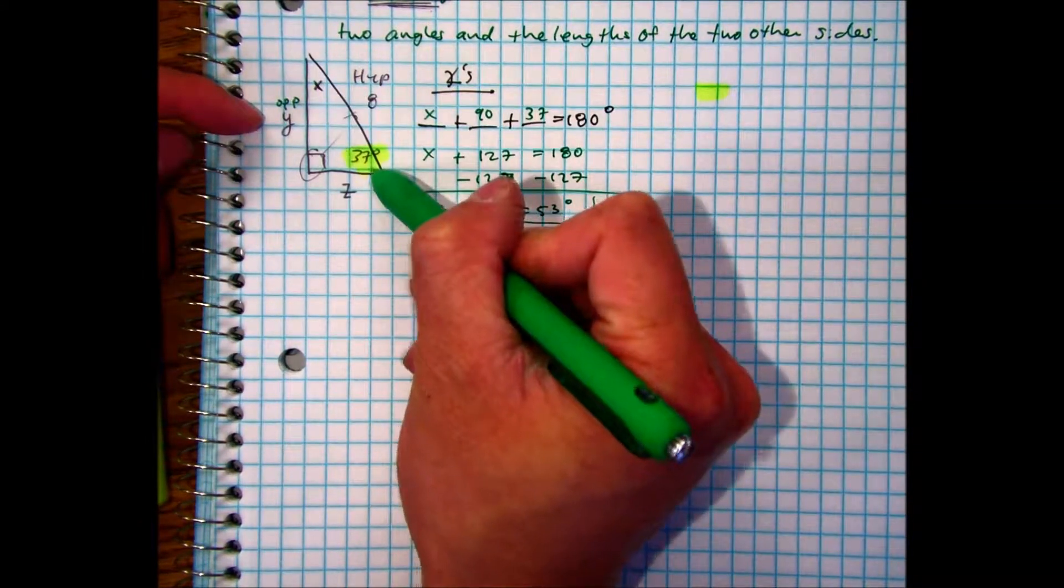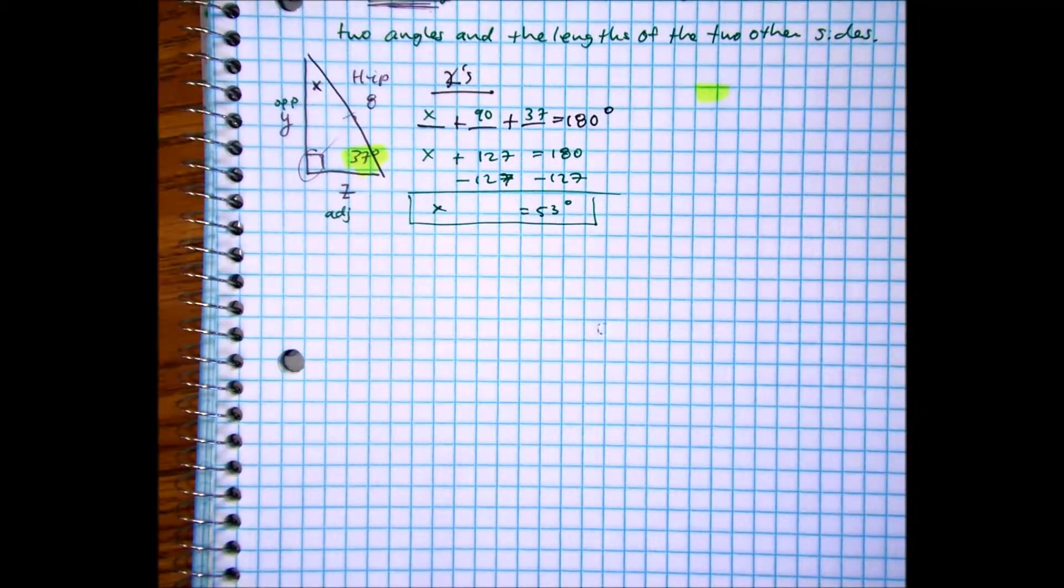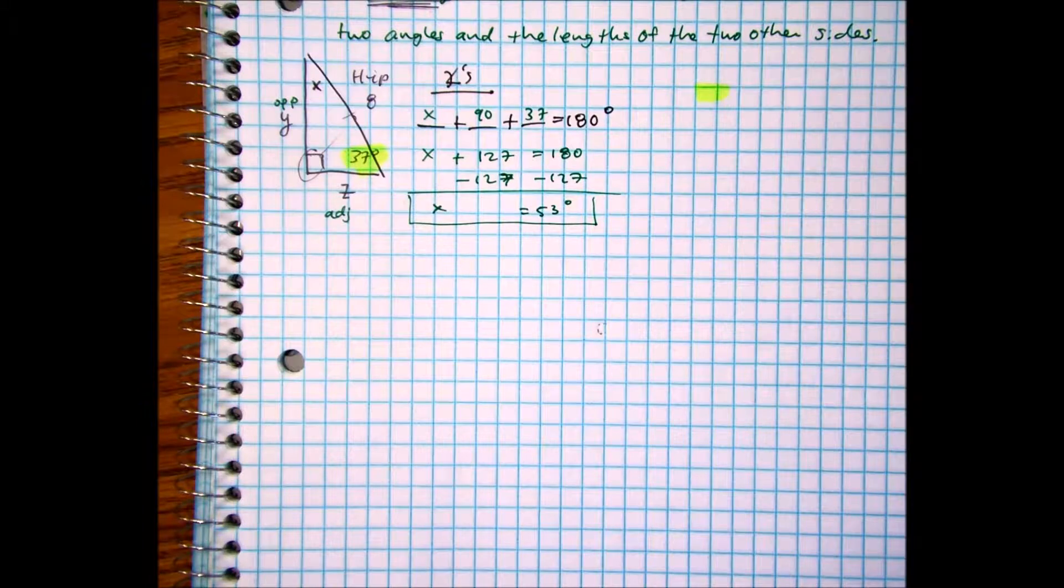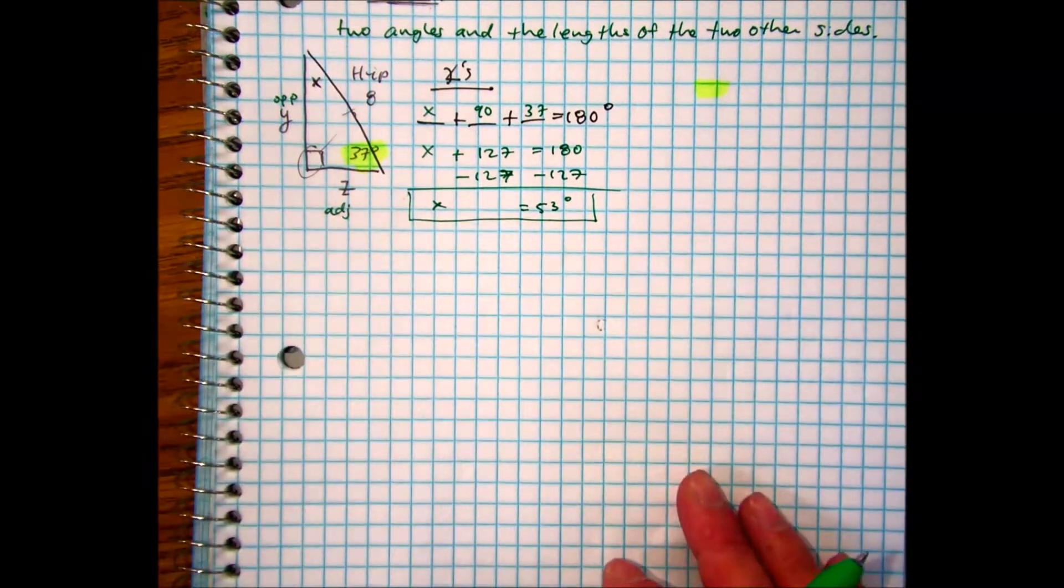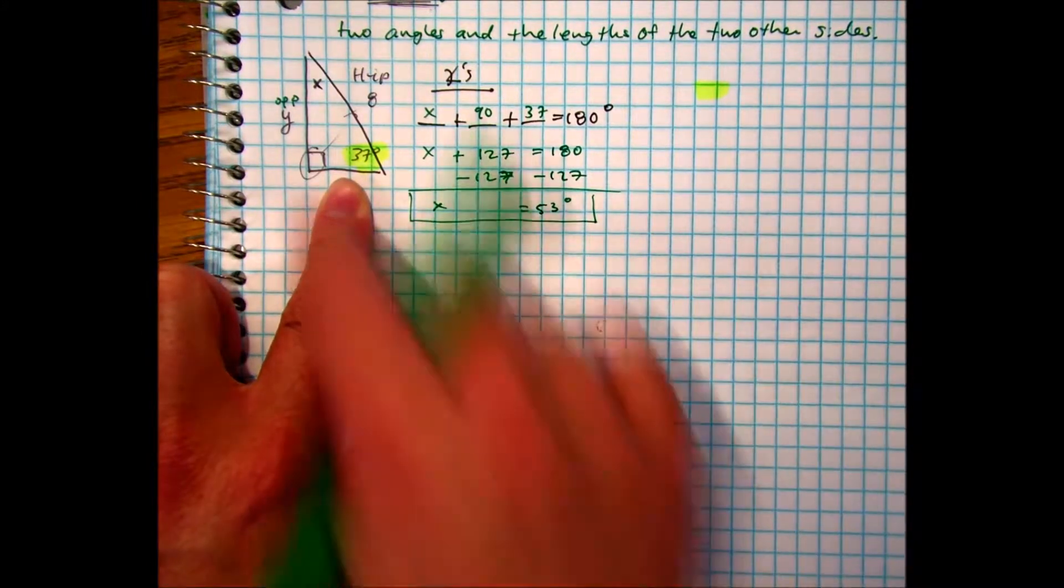Opposite, hypotenuse. This one is what? Adjacent. Now pay attention. In math, you cannot solve for two variables in a single equation. You would have to use a system of equations, or two equations. So if it helps you, you can just take your finger. There's two unknowns, you just cover one up. Don't use it. Let's solve for y.